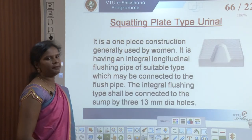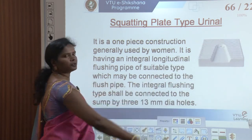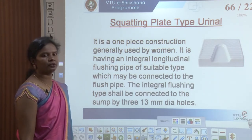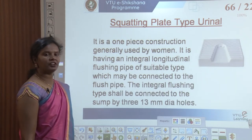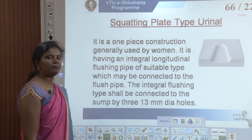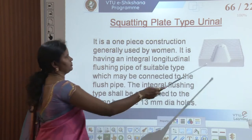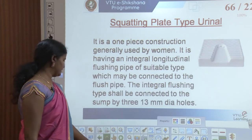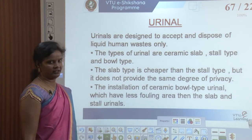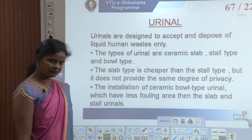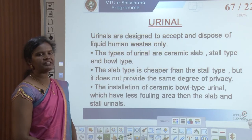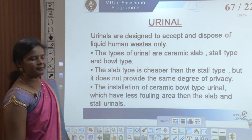The squatting plate type urinal is used in a squatting position, which is why it is called a squatting plate type urinal. It is also a one-piece construction and is generally used for women. It has an integral longitudinal flushing pipe of suitable type which may be connected to the flush pipe. The integral flushing type shall be connected to the sump by three 13 mm diameter holes, which are connected directly to the bottom trap. Urinals are designed to accept and dispose of liquid human waste only.